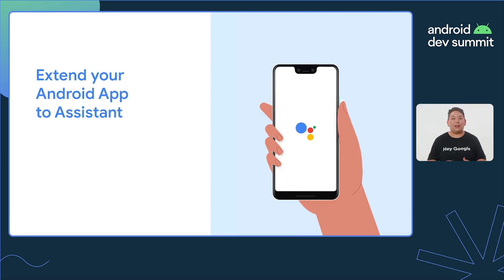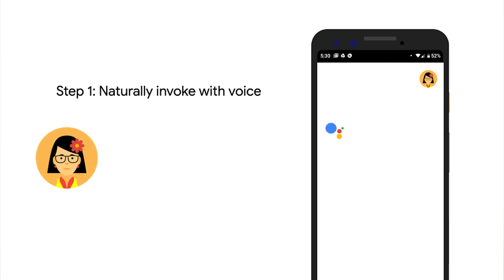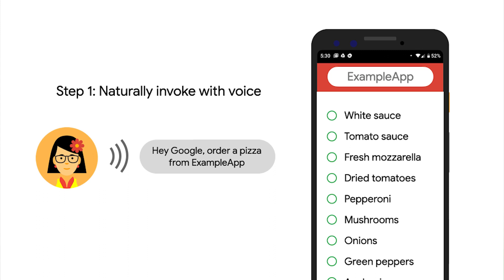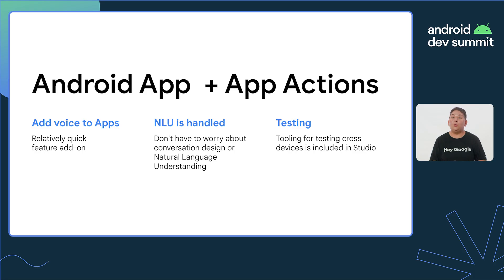Android apps are already helpful every day for users. Integrating your app with Google Assistant through App Actions can extend this helpfulness even further. App Actions allows users to launch and control Android apps with their voice. So they could say something like, 'Hey Google, order a pizza from Example app,' and the Android app will not only open the app, but also navigate to the section of the app where they could start their order. We've brought the Assistant and Android closer together to make it easier for developers to quickly develop and test voice integrations for their app.